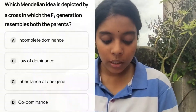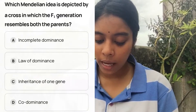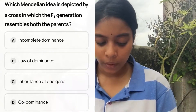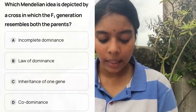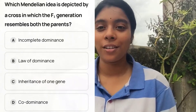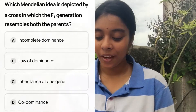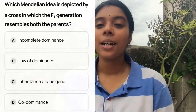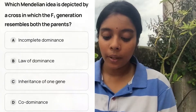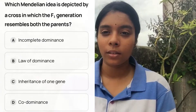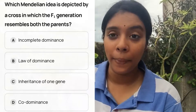Here's an example question: 'Which Mendelian idea is depicted by a cross in which F1 generation resembles both parents?' Options: A) Incomplete dominance, B) Law of Dominance, C) Inheritance of one gene, D) Co-dominance. This was asked in NEET 2013. The answer is co-dominance — F1 resembling both parents is seen in blood groups, which is co-dominance.